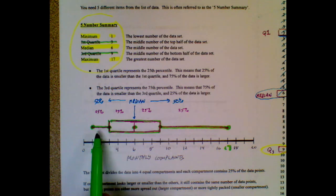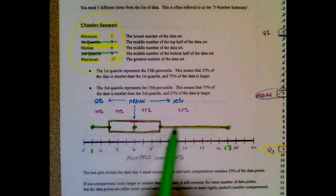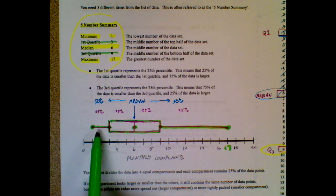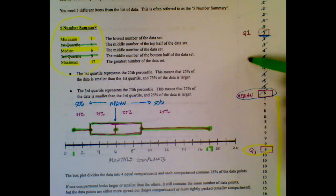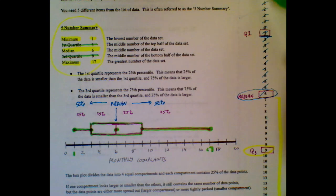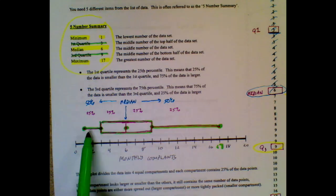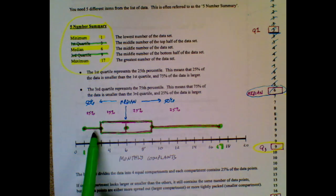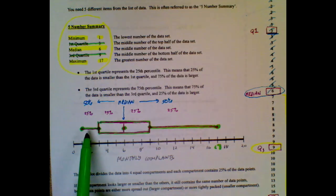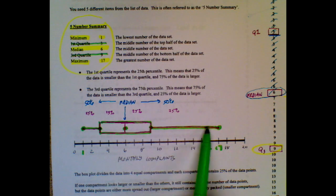Be careful because with this whisker being smaller than this whisker, some people start to think that there's fewer data points in there, but if this whole data set had about 40 data points, that means there's 10 data points in each of these compartments. It's just that these 10 data points are more closely packed together, and these 10 data points are more spread out.